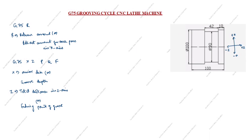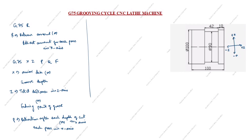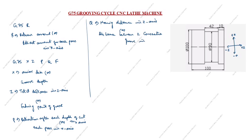Next, P — P stands for depth of cut in the X axis. Please note: it is depth of cut in X axis, or each pass in X axis. Next, Q — Q is the moving distance in the Z axis, or the distance between two consecutive grooves in the Z axis.